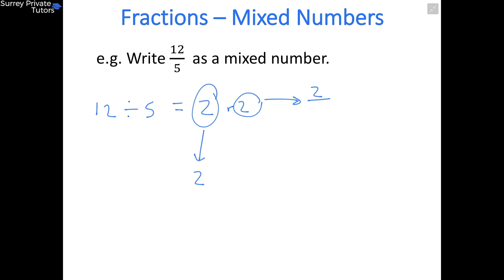So that becomes 2/5. Simply write that next to your integer, and now you have a mixed number. We've converted 12/5 into 2 and 2/5.